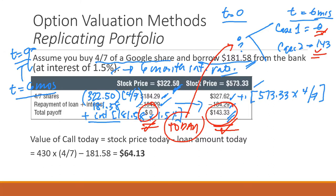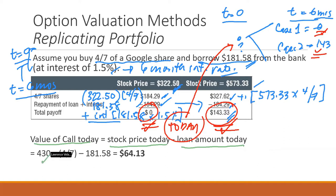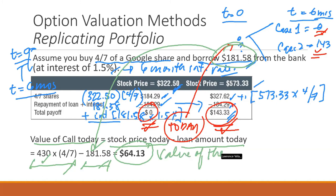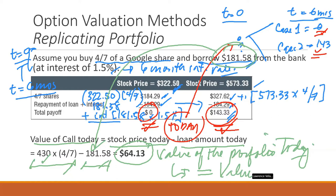To value the call option, you take the stock price today of $430 times four-sevenths, which gives the value of the shares in the replicating portfolio, minus the loan amount of $181.58 borrowed today. The difference between the value of the shares and the value of the liabilities gives you the value of the portfolio today, which is also equal to the value of the option.